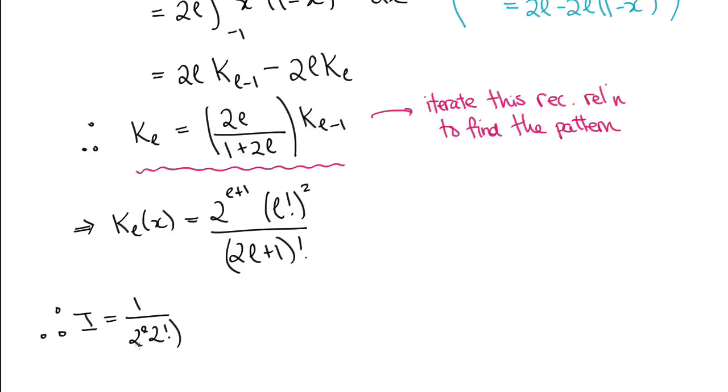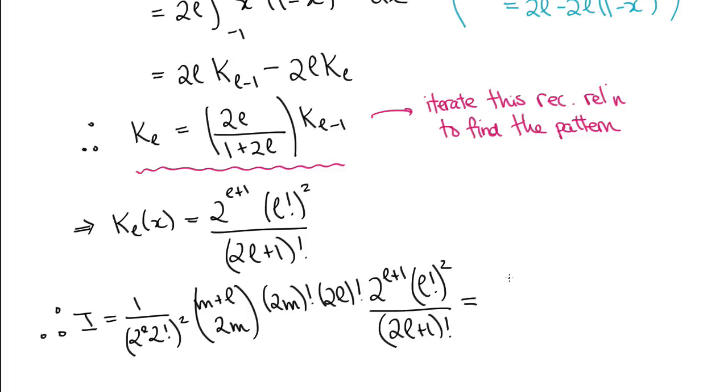At last, we stick KL into the integral i, simplify the factorials, and we're left with i is equal to 2 times M plus L factorial over 2 L plus 1 times L minus M factorial, which is the value of the inner product for the two equal eigenfunctions. This completes the question.